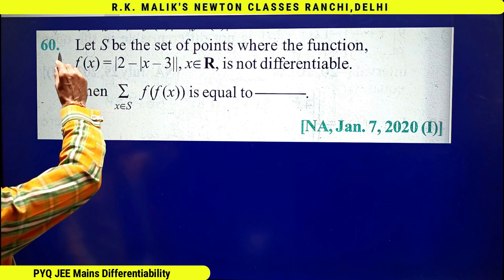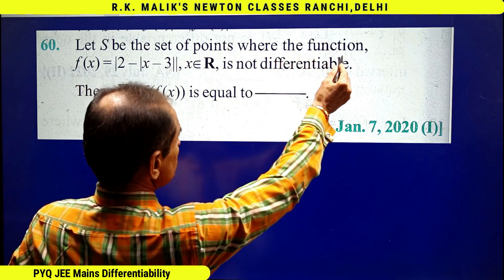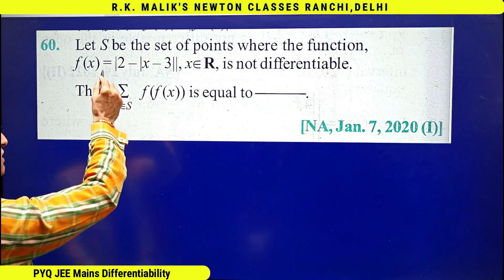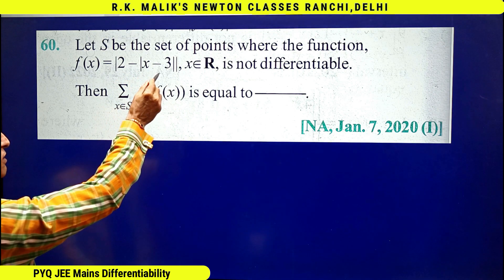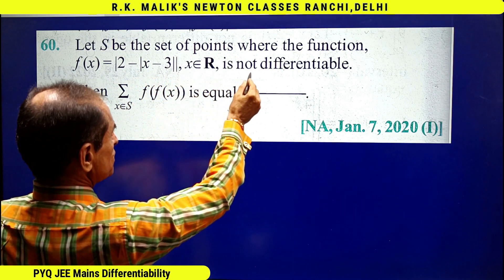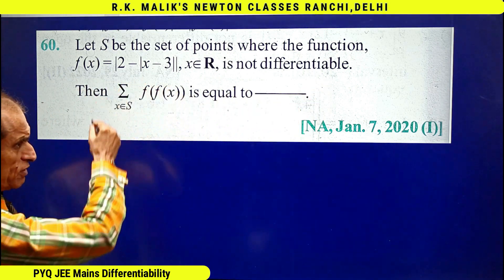In this question, it is given that let S be the set of points where the function f(x) equals mod of 2 minus mod of x minus 3, where x belongs to R, is not differentiable. Then you have to find the value of this sum.